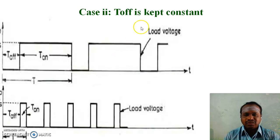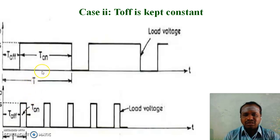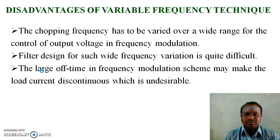In Case 2, where Toff is kept constant, Ton is varied. Due to the variation of Ton, the time period T is varied, that is, frequency is varied. So it is known as the frequency modulation system.